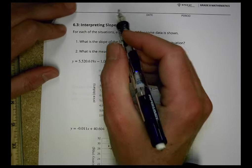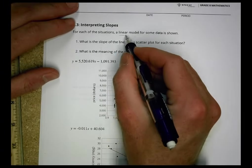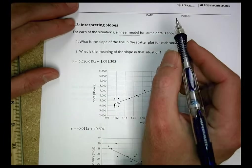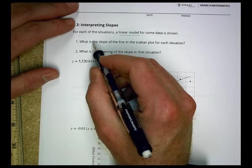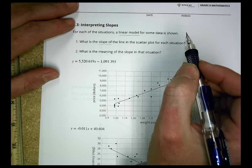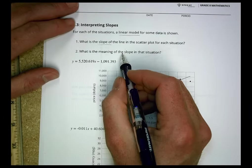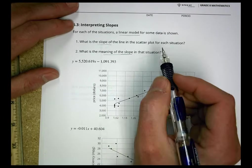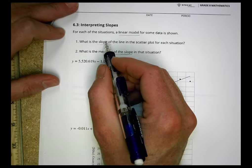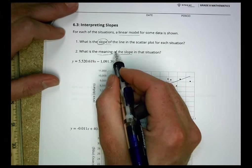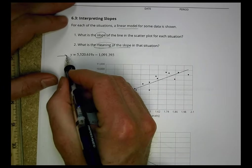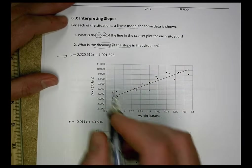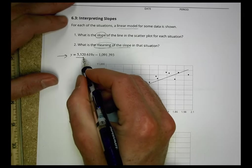6-3. For each of the situations, write a linear model for some data as shown. What is the slope of the line, the scatterplot, for each situation? And what is the meaning of the slope in that situation? Okay. So each of them has a slope. What is it? And what's the meaning of the slope? So let's take a look at our model. Here's our linear model, which is the equation. The slope is going to be the number in front of the x.